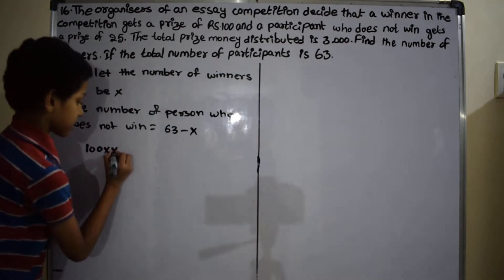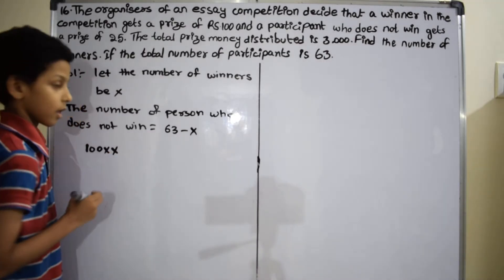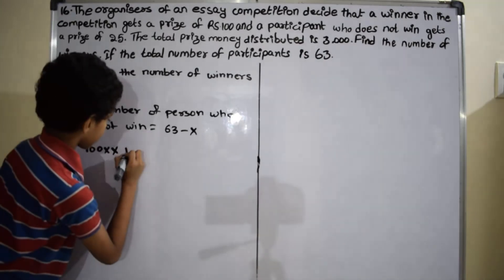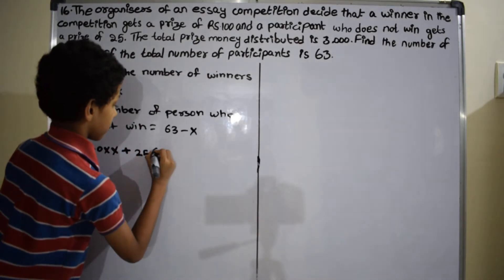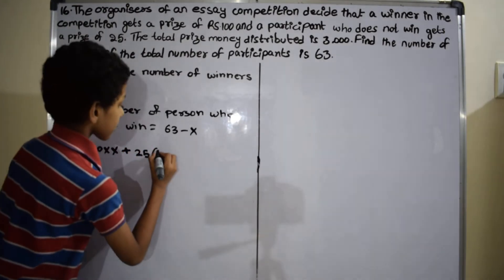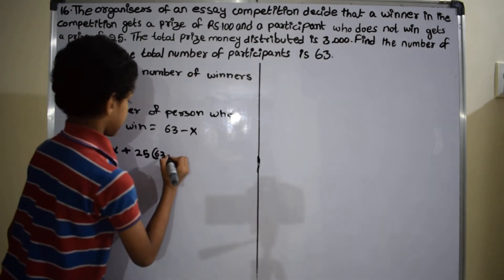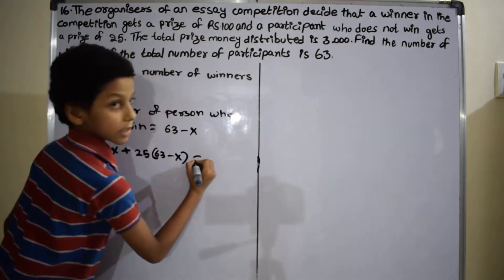100 times x plus 25 times 63 minus x equals 3,000.